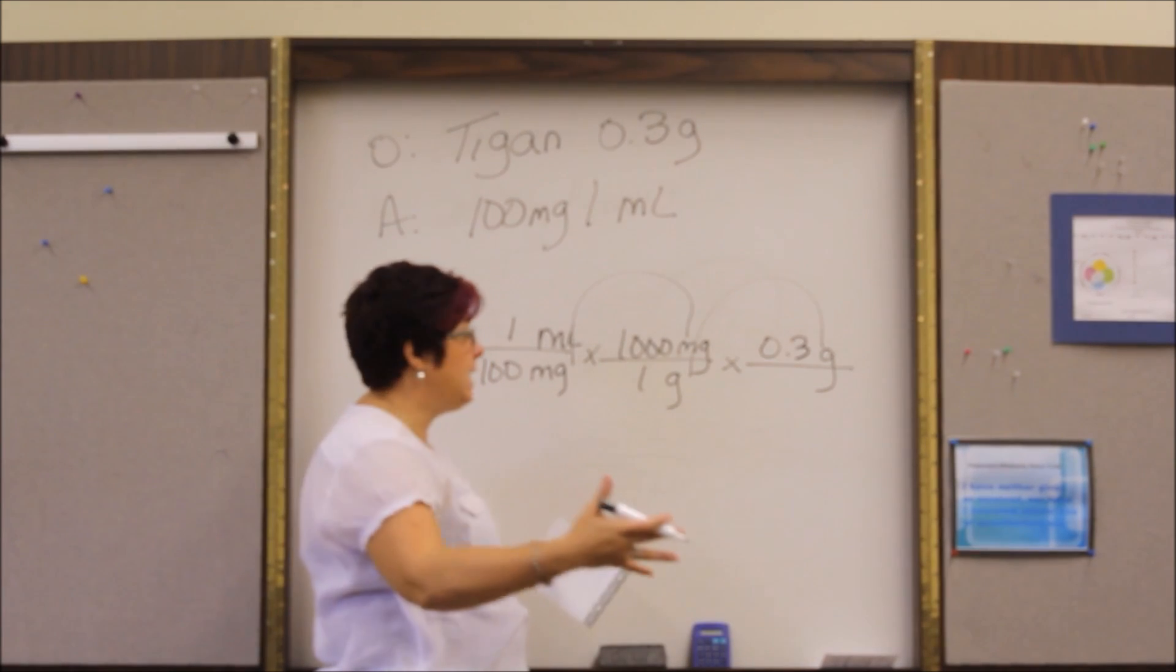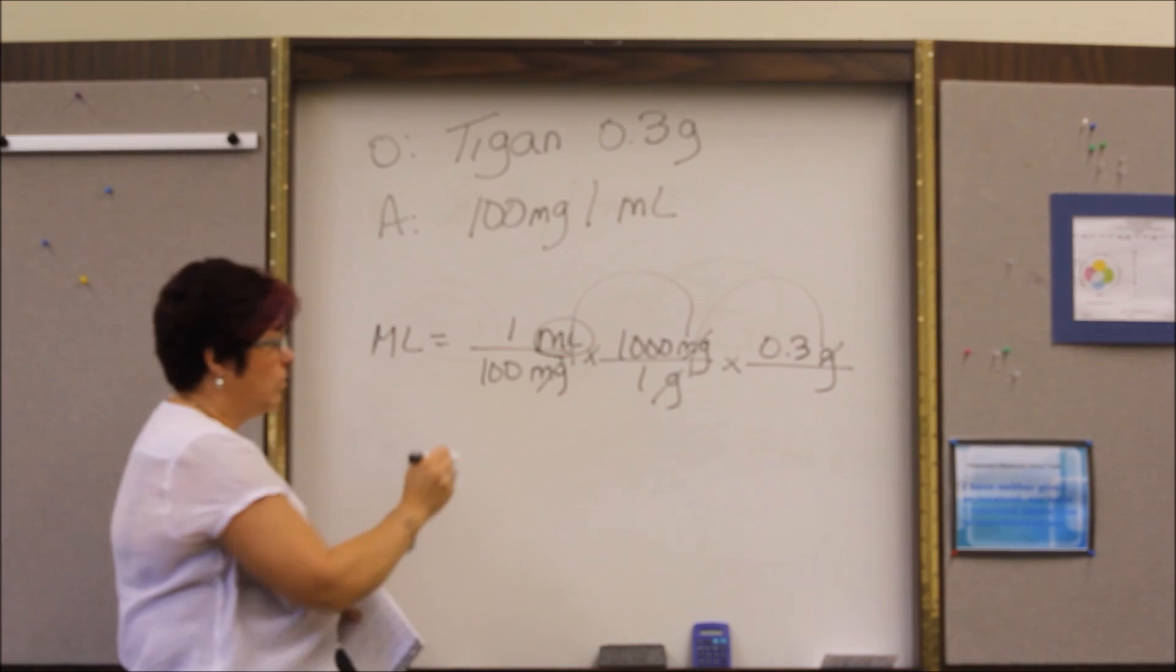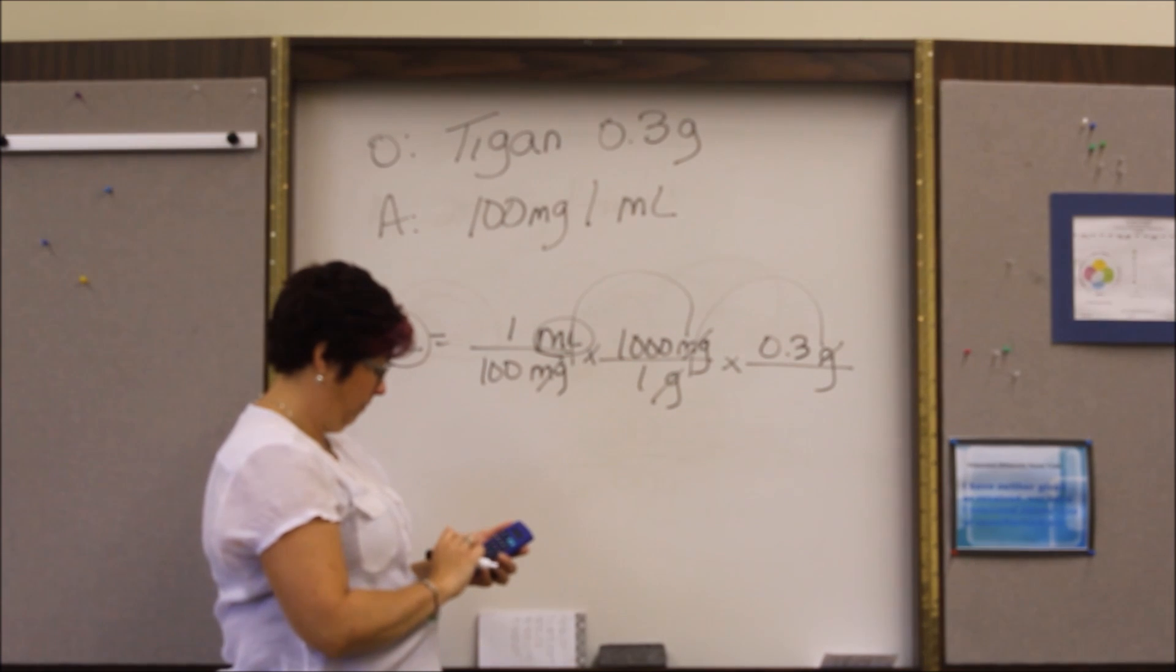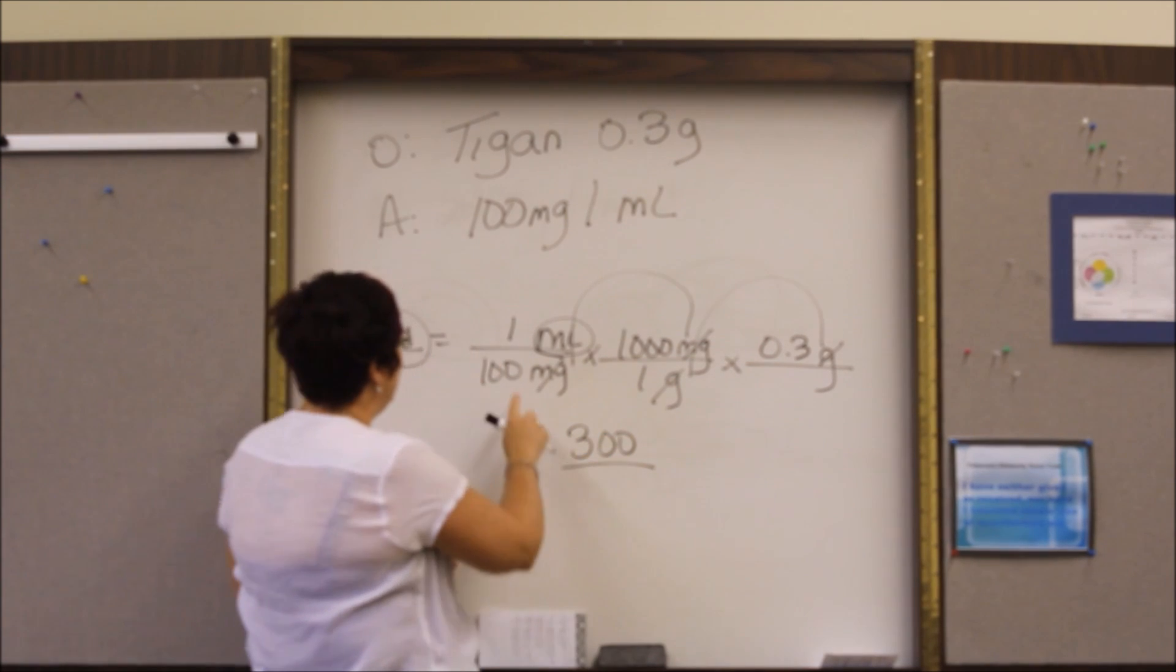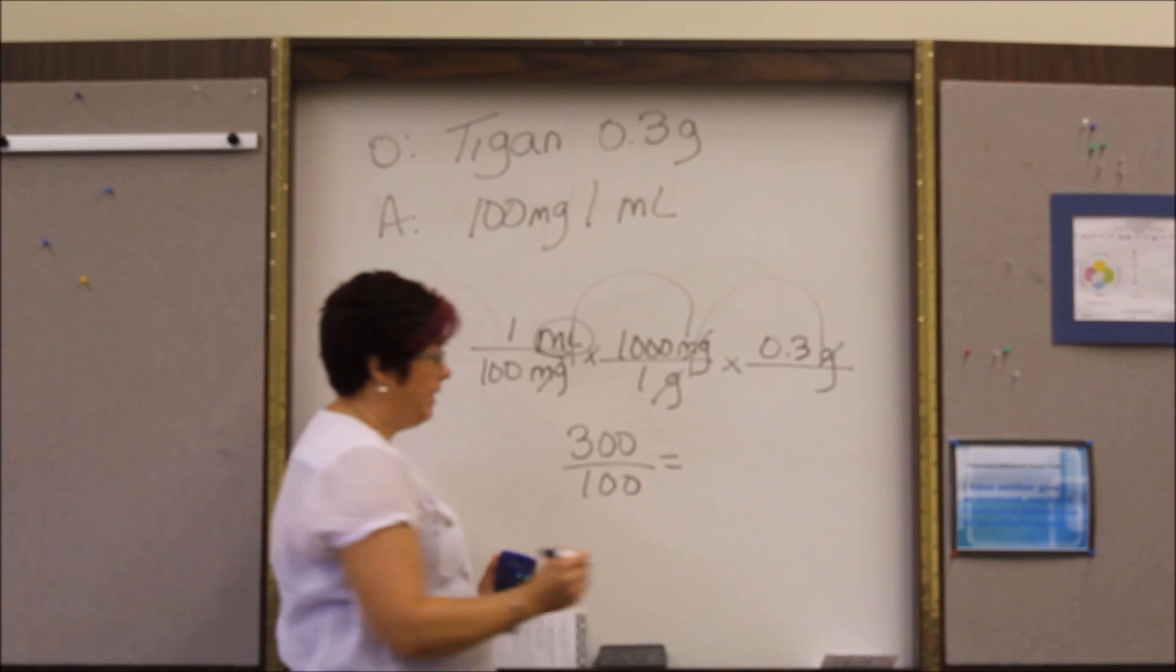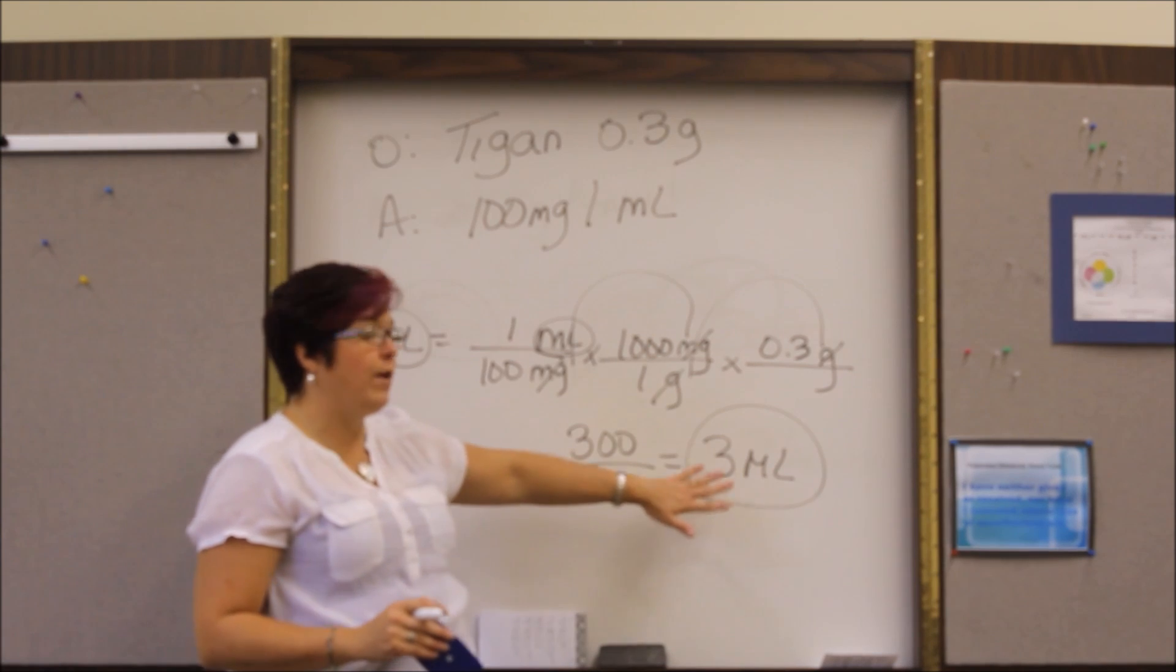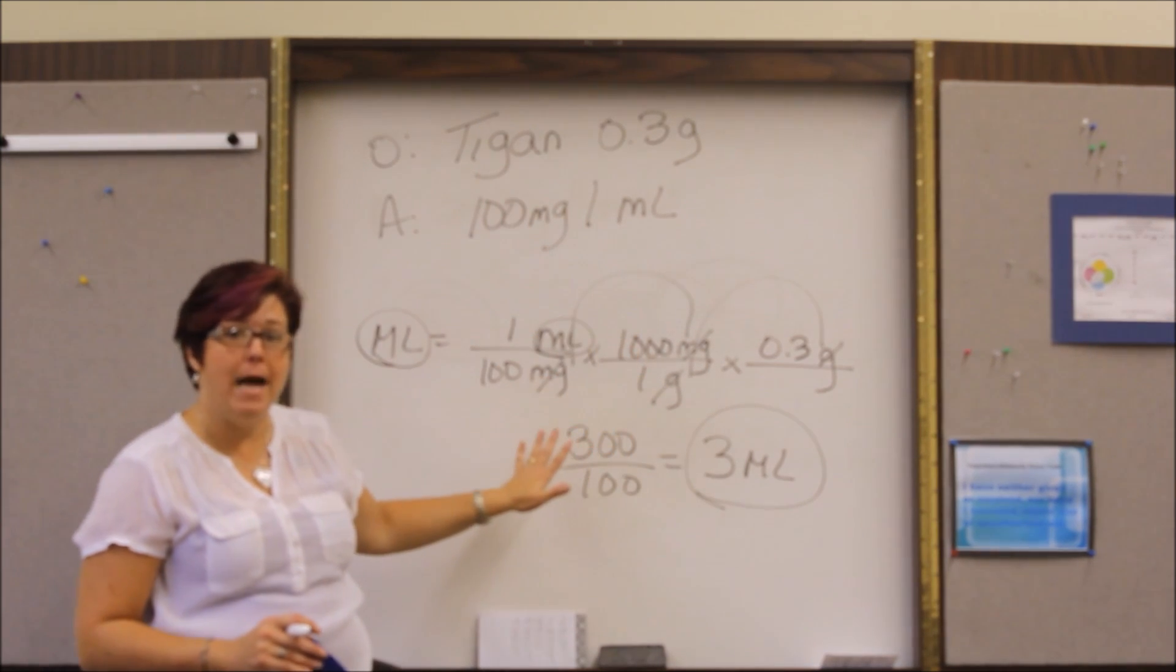Start canceling out. See if you are finished or do you need to keep going. We're left with milliliters. Milliliters is what our answer needs to be in so we can do our math now. One thousand times 0.3 equals 300. 100 times 1 is 100. 300 divided by 100 is 3. Don't forget the unit of measurement for your answer to be complete. Now we wouldn't necessarily give three milliliters in one injection. This is just to show you how to do the math.